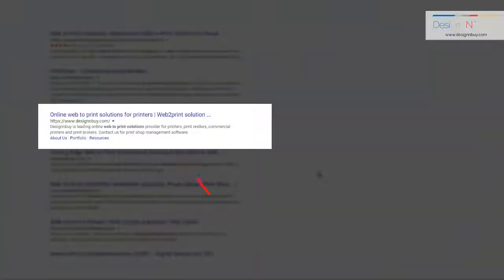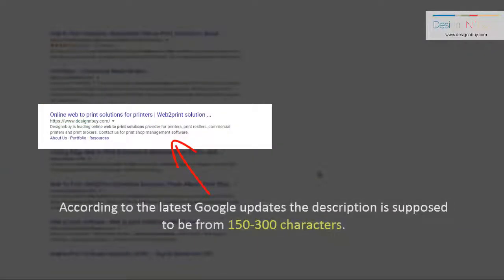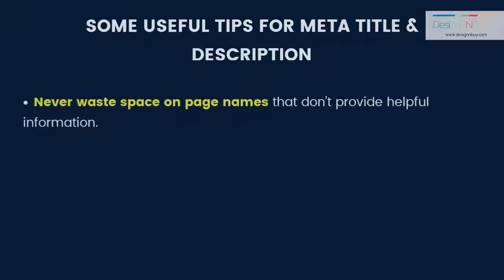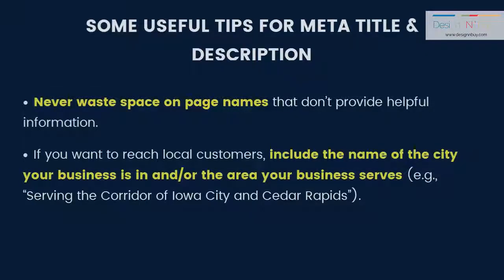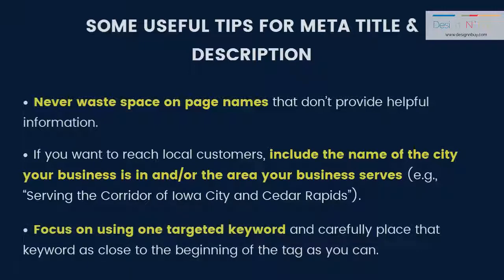Note that according to the latest Google updates, the description is supposed to be from 150 to 300 characters. Any more than that and you run the risk of having an incomplete description. The space is precious and every word counts. Never waste space on page names that don't provide helpful information. If you want to reach local customers, you can include the name of your city, your business, and even the area your business serves. Focus on using one targeted keyword and place that keyword as close to the beginning of the tag as you can.